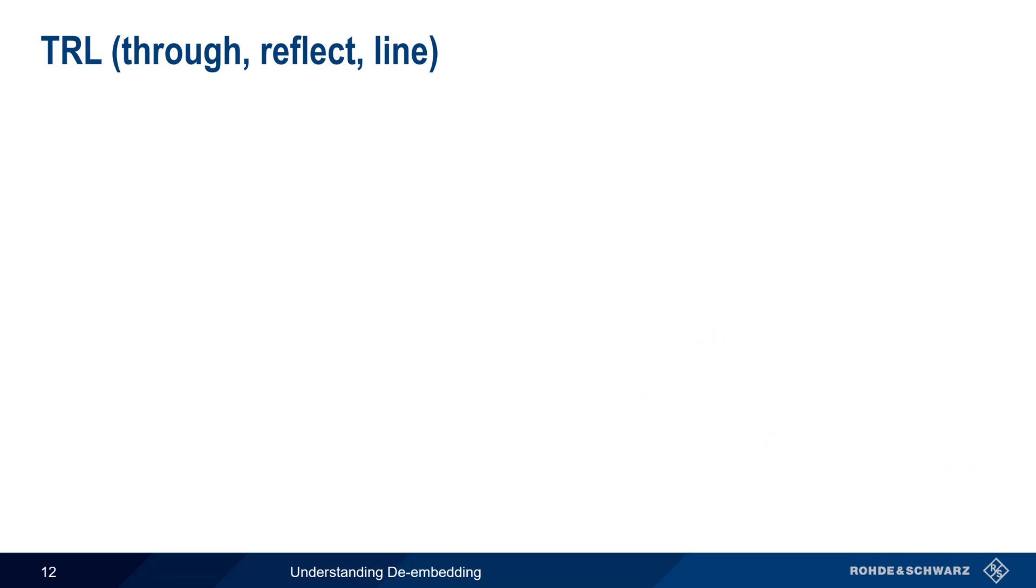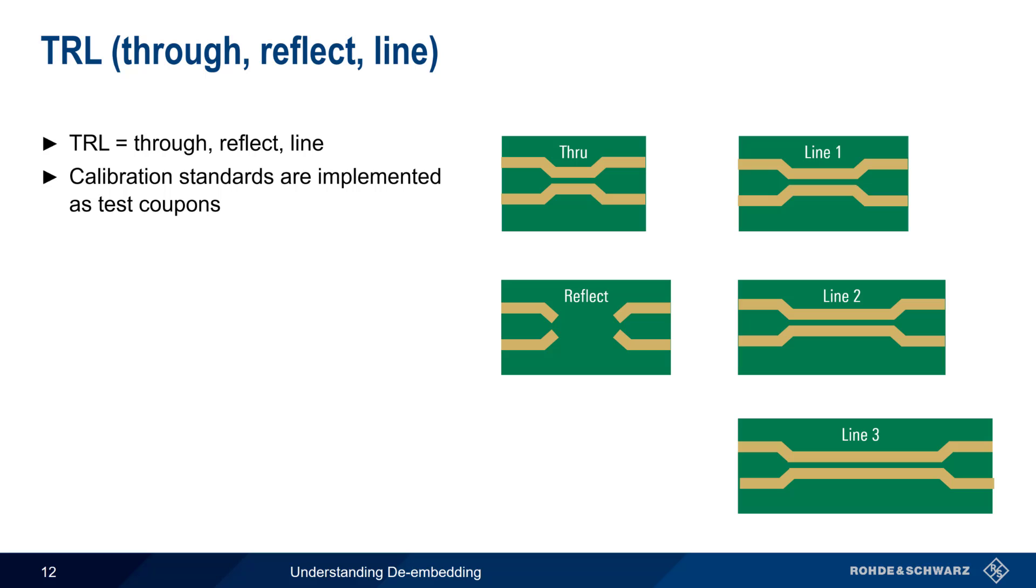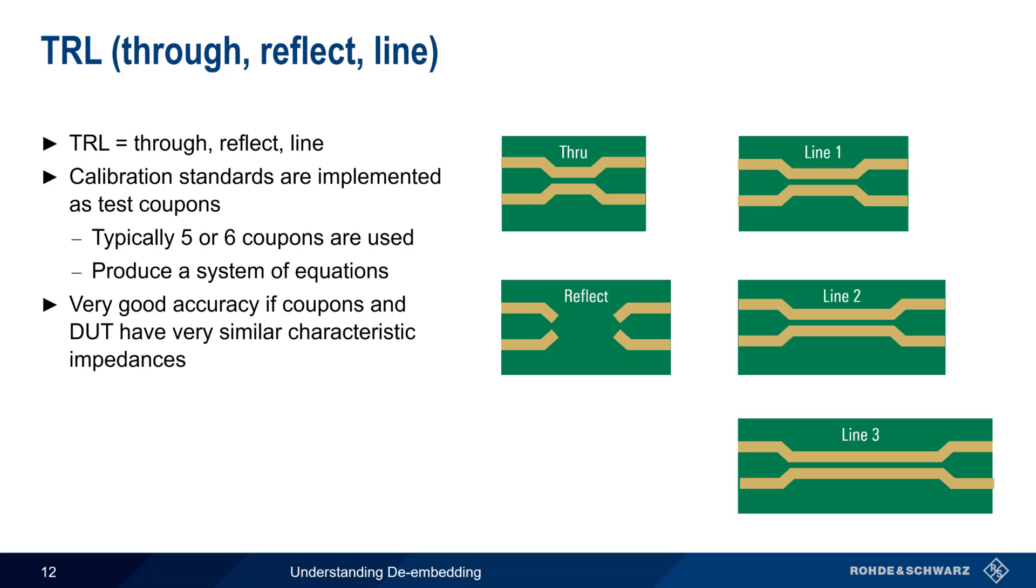One method of implementing these calibration standards is something called TRL calibration, where TRL stands for the calibration standards through, reflect, and line. These calibration standards are normally implemented in the form of test coupons, which are specially prepared sections of printed circuit boards. Typically, TRL calibration uses five or six coupons of various types. Making measurements with multiple coupons creates a system of equations that can then be solved for the so-called error terms, similar to how this is done in the case of coaxial DUTs and CAL standards. This methodology provides very accurate results if the coupons and the DUT have similar characteristic impedances.